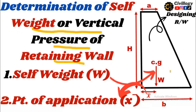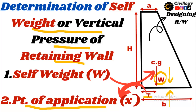As discussed in the previous video, the weight W acts downward whereas the bearing capacity of the soil underneath acts in the opposite direction. It is important to determine the self-weight because when designing a retaining wall, the weight must be less than the bearing capacity of the soil. We will also discuss the point of application of W, denoted by x-dash.